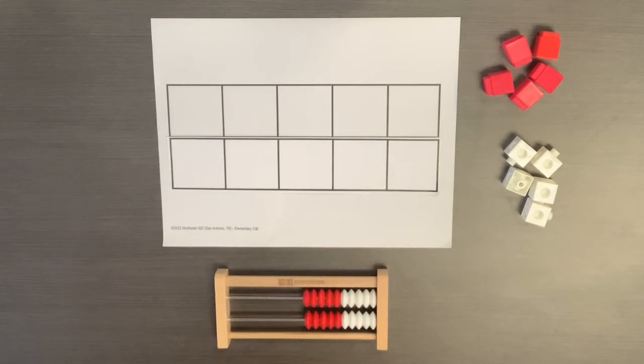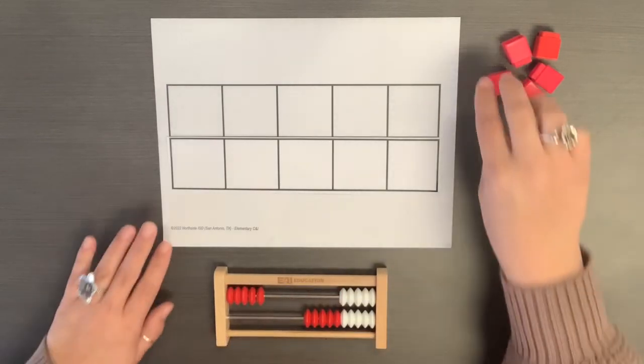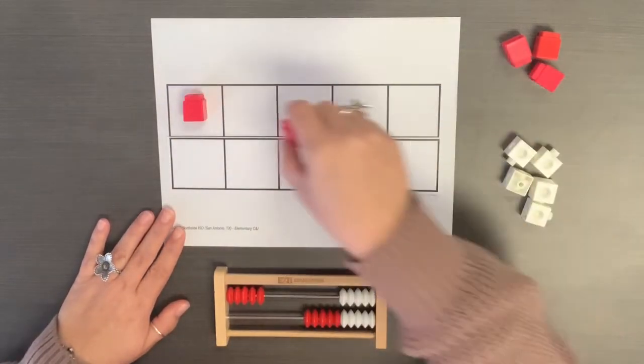Connections may be made between representations on the Rekenrek and the 10 frame. Slide 5 beads to the left and fill up 5 spaces on the 10 frame.